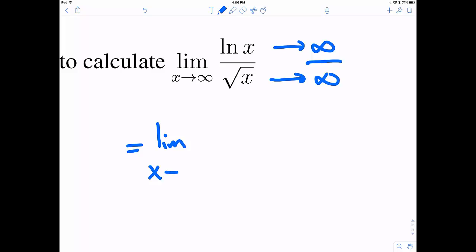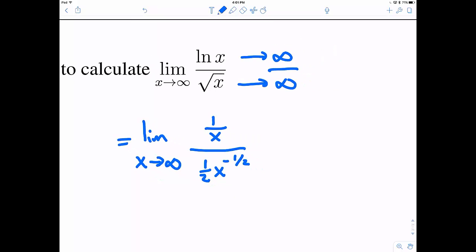So therefore, by L'Hopital's rule, this is the same thing as limit as x goes to infinity of, and now the derivative of the natural log is going to be 1 over x, and the derivative of the square root of x is this 1 half x to the negative 1 half.